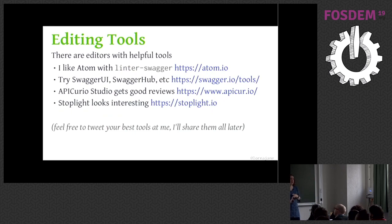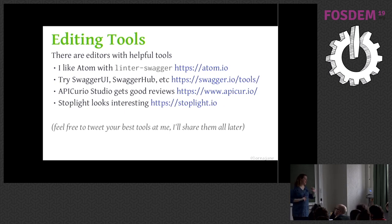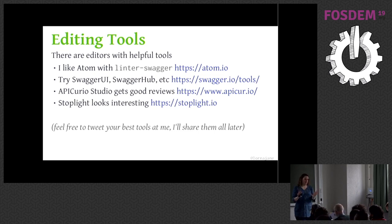Try Swagger UI, Swagger Hub — these are SmartBear tools you might find useful. Swagger Hub will help you write your YAML and publish your documentation. API Curio Studio gets really good reviews — I haven't used it, but it's earned a place here. Stoplight looks interesting; I'm just not convinced that they are live with their v3 support, but it's in some of their tools and it's on their roadmap. If you have favourite OpenAPI tools, please tweet them at me and I'll try and tweet them back or update the slides — if I'm missing something, let's share that with everybody.